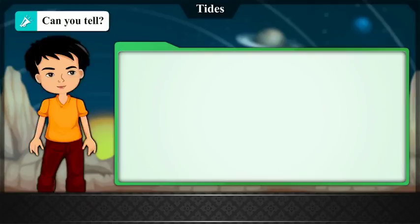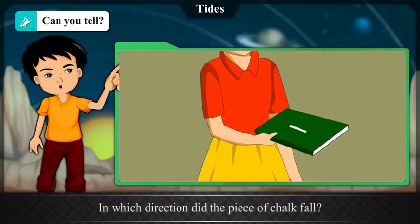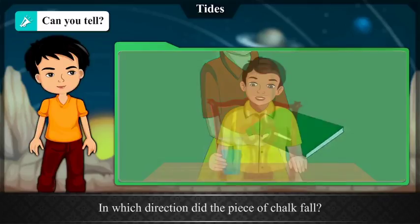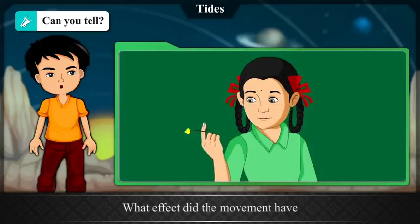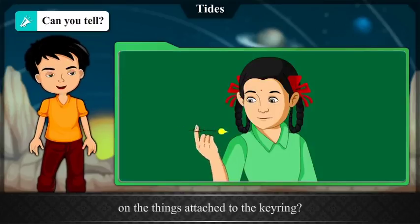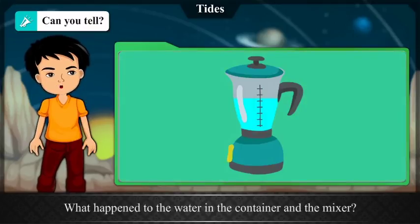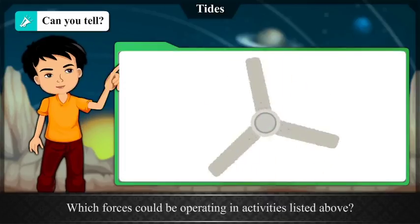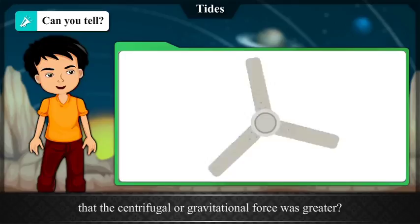Can you tell? On the basis of the questions given below, discuss the results of the activities listed above. In which direction did the piece of chalk fall? Where did the water in the glass show a bulge? What effects did the movement have on the rings attached to the key ring? What happened to the water in the container and the mixer? Which forces could be operating in the activities listed above? In which activities did you find that the centrifugal or gravitational force was greater?